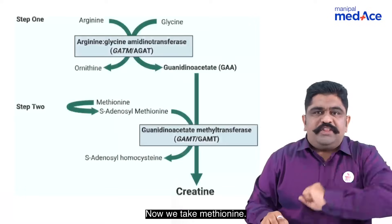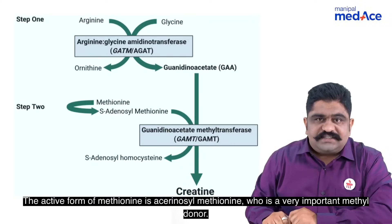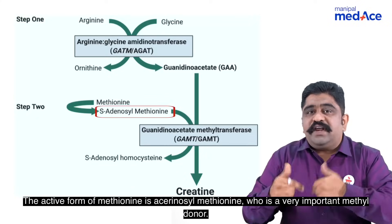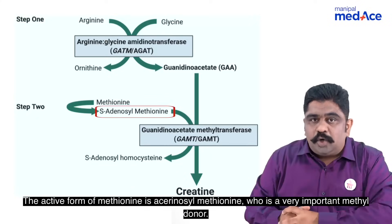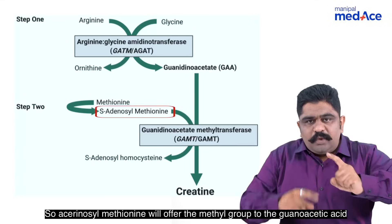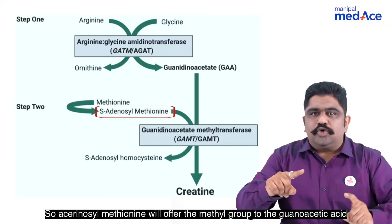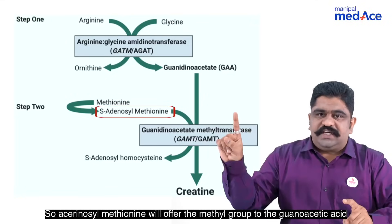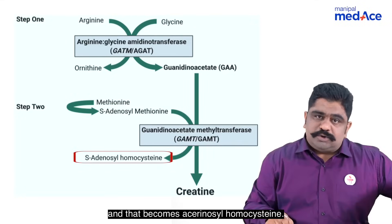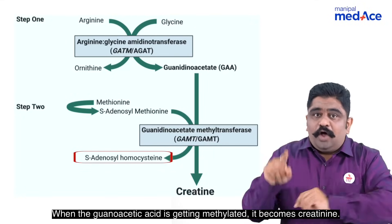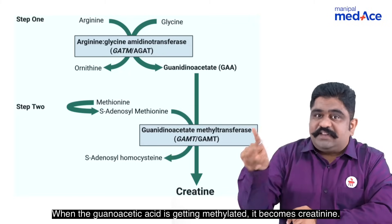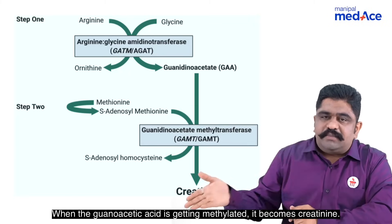We take Methionine. The active form of Methionine is S-Adenosyl Methionine, which is a very important methyl donor. S-Adenosyl Methionine will offer the methyl group to the guanidinoacetic acid, and that becomes S-Adenosyl Homocysteine. When the guanidinoacetic acid is getting methylated, it becomes Creatine.